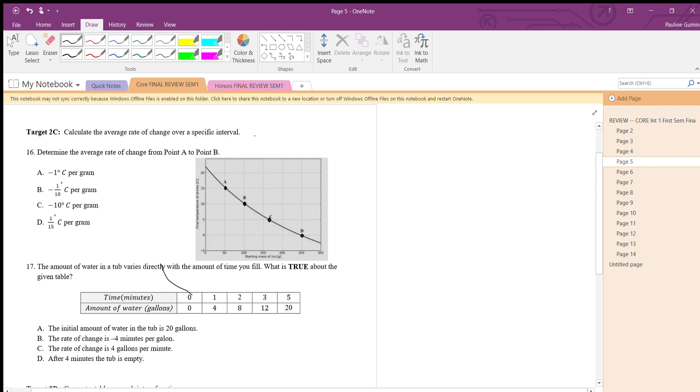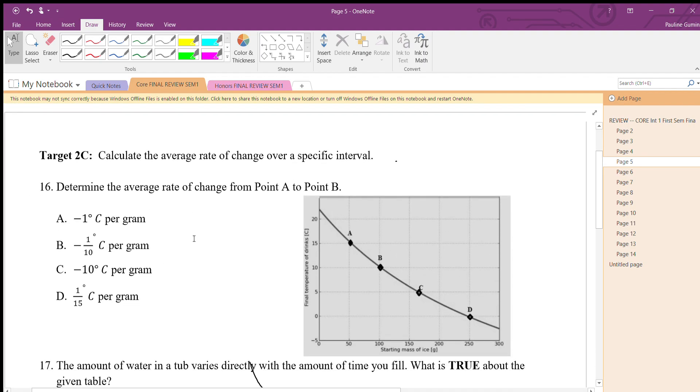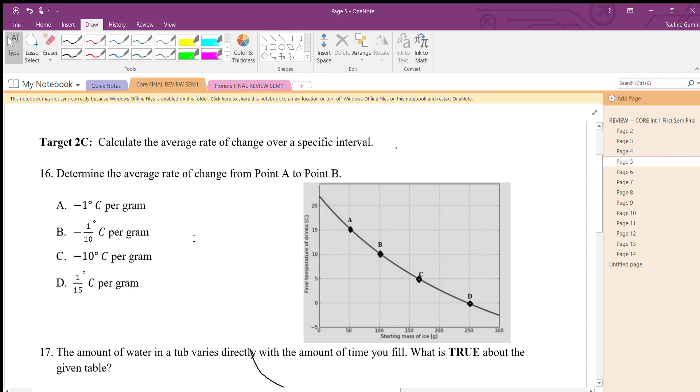We're determining the average rate of change from point A to point B. Recall that your average rate of change is the change in y's over your change in x's. Our y's are on the vertical, so let's see the change vertically between A and B. Well, vertically we go down 5, then horizontally we go over 50. So my average rate of change is negative 5 over 50. That's not in my answers - well, that's because we haven't reduced it. Both 5 and 50 are divisible by 5, and I'm left with negative one-tenth. Letter B is our answer.